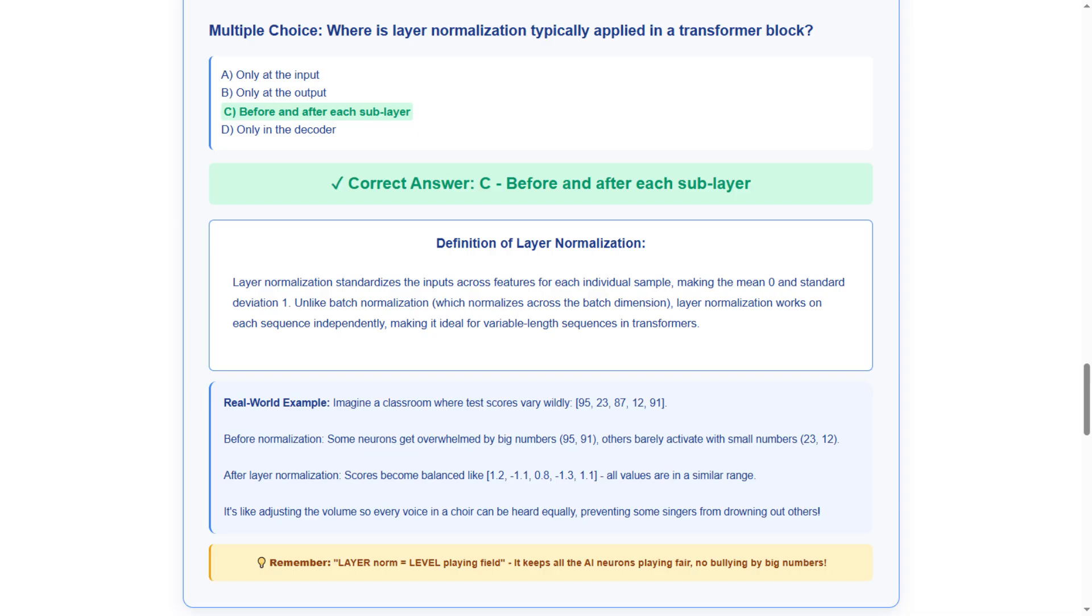The layman explanation shows how wildly varying test scores like 95, 23, 87, 12, 91 get balanced to similar ranges like 1.2, minus 1.1, 0.8, minus 1.3, 1.1, preventing some neurons from overwhelming others. This creates neural balance.